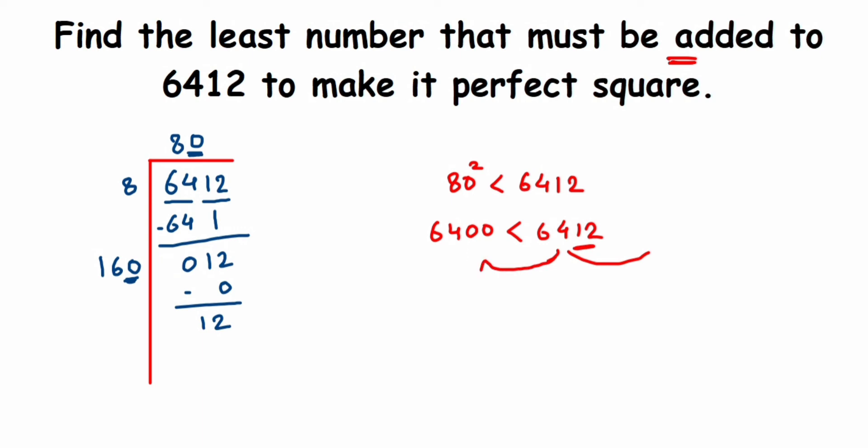They're asking us to find the least number to be added. I need to add something to this, not subtract. If I have to subtract, just remove 12 from here. I have to add means the greater number will be the next perfect square, which is 81 square. After 80 we get 81. 81 square is 6561.